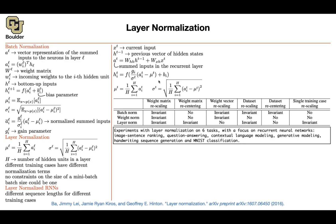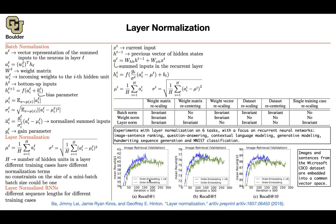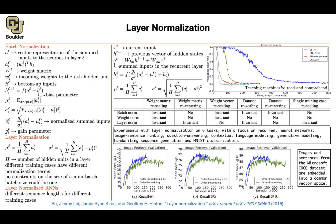The main application in the paper is for pairs of images and text — multimodal tasks. They cover image-sentence ranking (a retrieval task), question answering, contextual language modeling, generative modeling, handwriting sequence generation, and MNIST classification. The worst performance is on MNIST because these are images — layer norm doesn't work as well for images. For the retrieval task, adding layer norm makes the network train much faster. Metrics include recall at 1, 5, and 10, evaluated on the Microsoft COCO dataset.